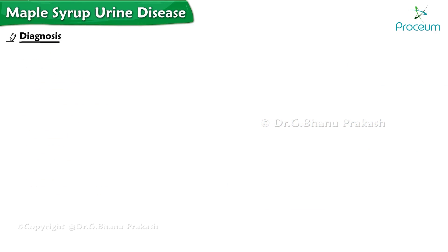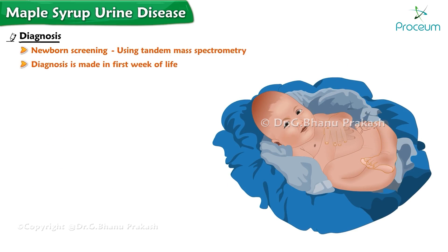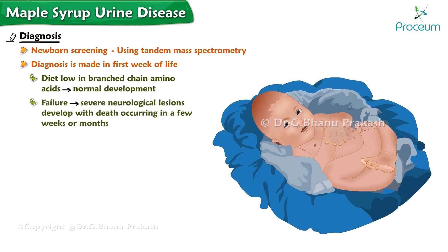Diagnosis and Newborn Screening: Classic maple syrup urine disease in newborn infants is readily detected by screening using tandem mass spectrometry. If the diagnosis is made in the first week of life and a diet low in branched-chain amino acids is started, normal development is possible. Failure to initiate such measures results in serious consequences — severe neurological lesions develop, with death occurring in a few weeks or months.